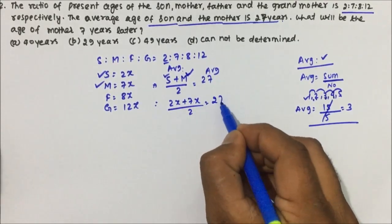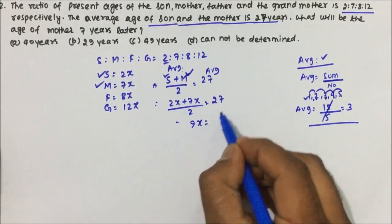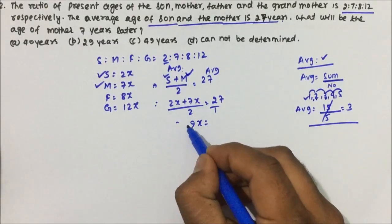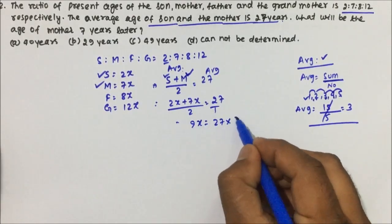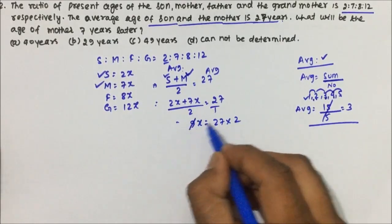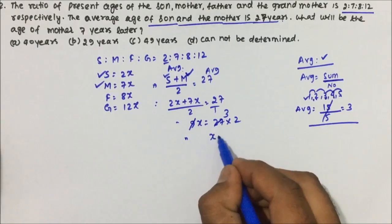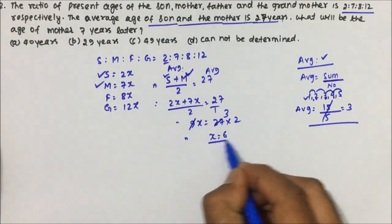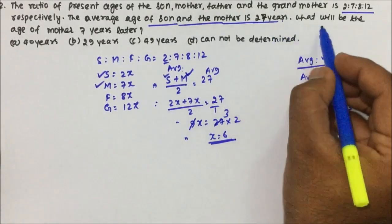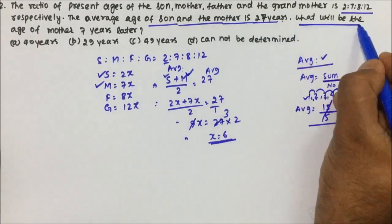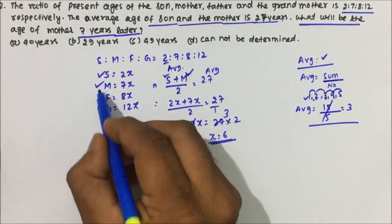So 9x / 2 = 27. By cross multiplication, 9x = 27 × 2 = 54. Dividing 54 by 9, the value of x = 6. The question asks for the age of the mother 7 years later.